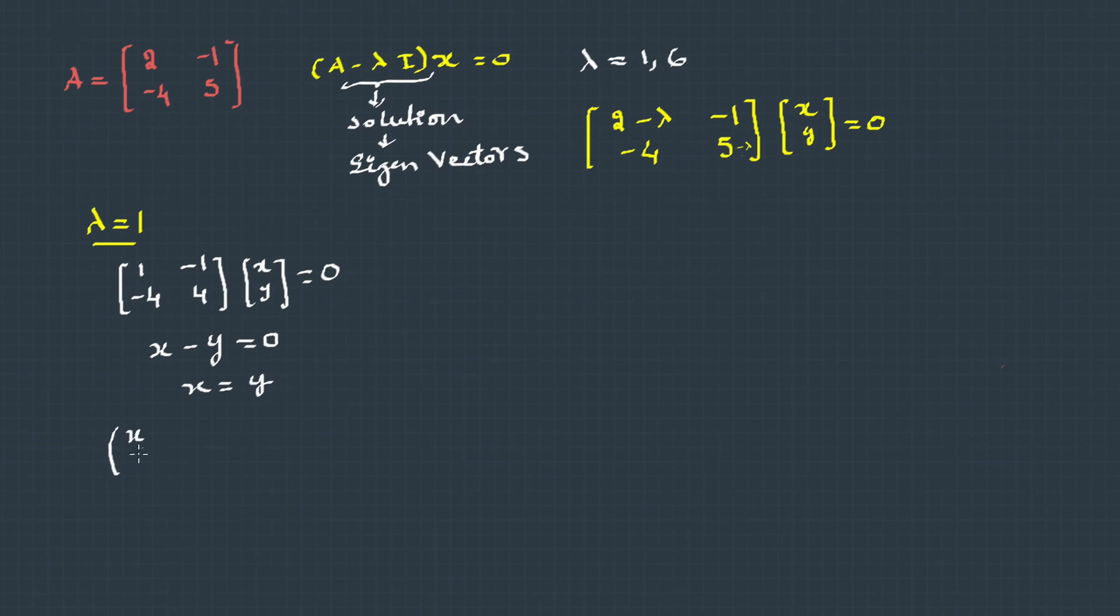Therefore the solution is, for x,y, if I take y as some t, then x is also t. So if I take the t out, left over is 1 and 1. So (1,1) is one of the eigenvectors.